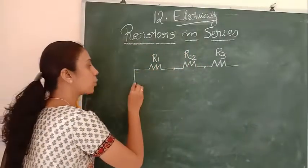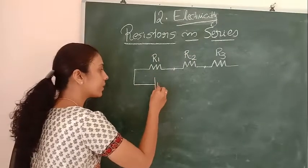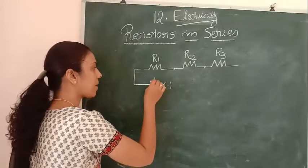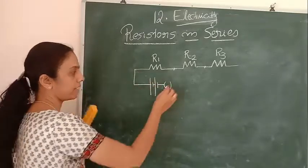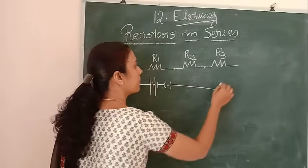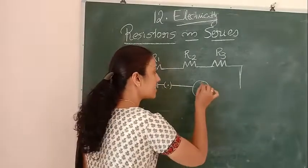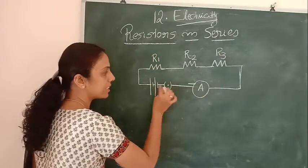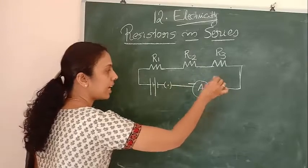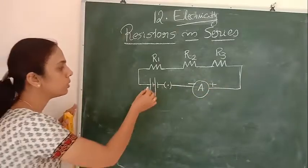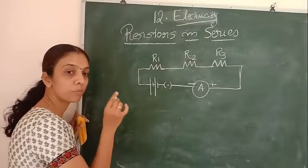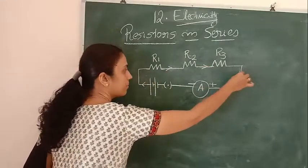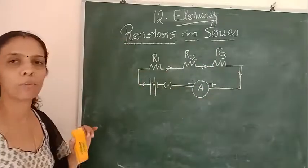This series connection — if I want to give it as a full circuit, I will be connecting a cell, or a battery also we can connect. Then close the circuit. An ammeter is connected over here. So here it is negative, and here it will be positive. Current will be flowing through the circuit from positive terminal to negative terminal. This is how current will be flowing through the circuit.